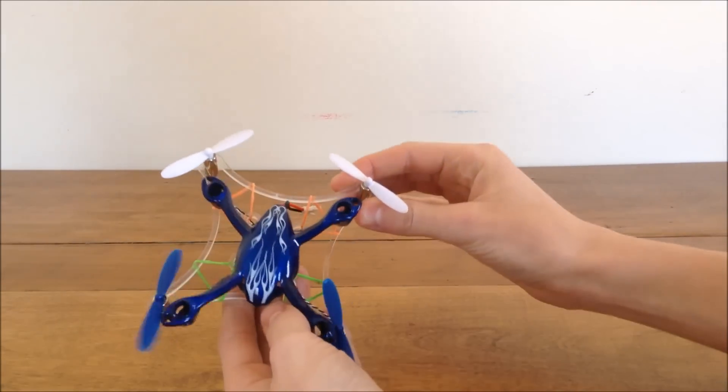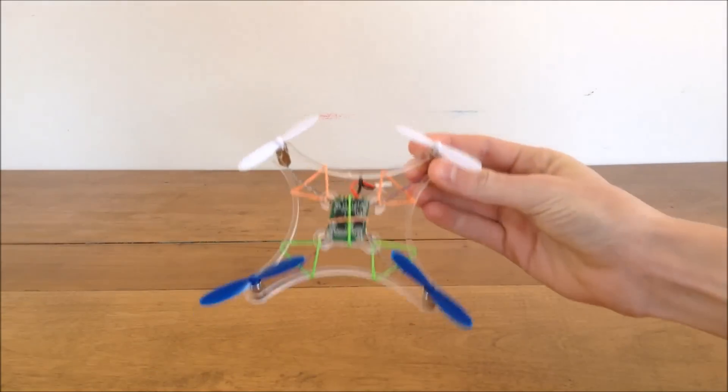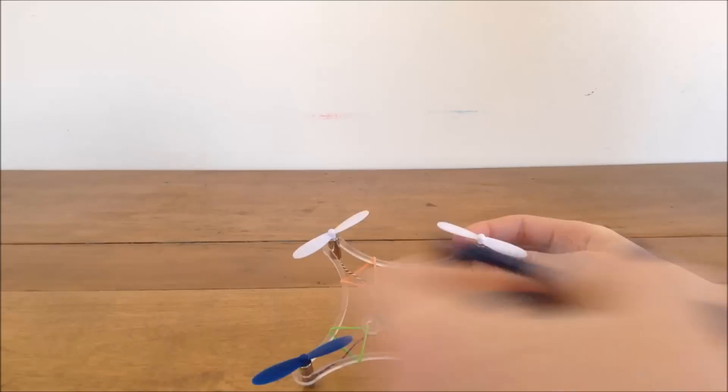You can see it does make it a little bit larger, so this is kind of in between size of a larger quad and more of a micro like the Hubsan X4 is.